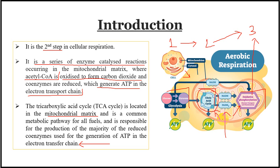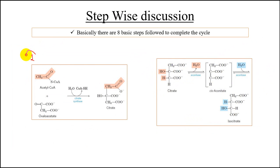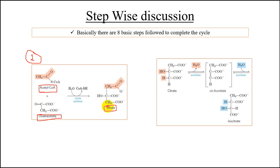The citric acid cycle provides the electrons that fuel oxidative phosphorylation, which is the major source of ATP and energy. As the acetyl group is broken down, electrons are stored in the carrier NADH and delivered to the complexes. The TCA cycle, tricarboxylic acid cycle, Krebs cycle, or citric acid cycle — these are all different names for the same cycle. Now, the very first step: condensation of acetyl coenzyme A with oxaloacetate, catalyzed by citrate synthase.